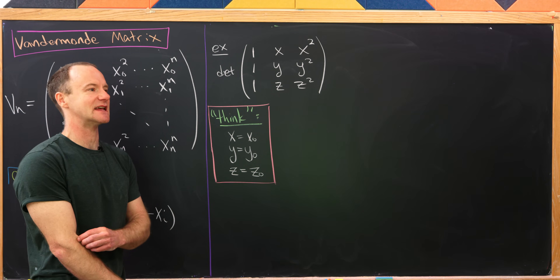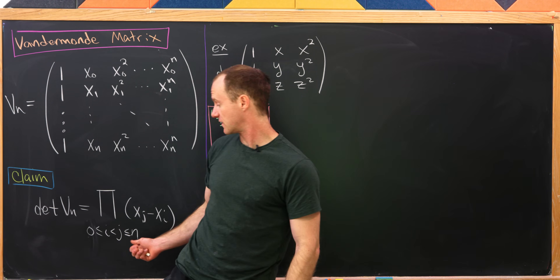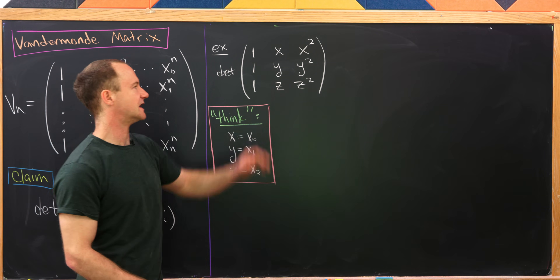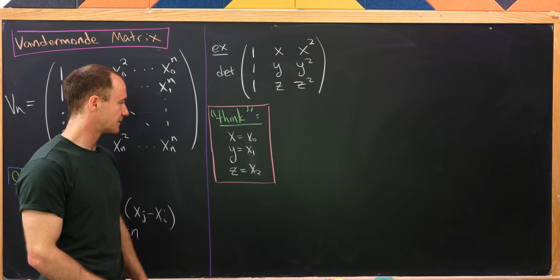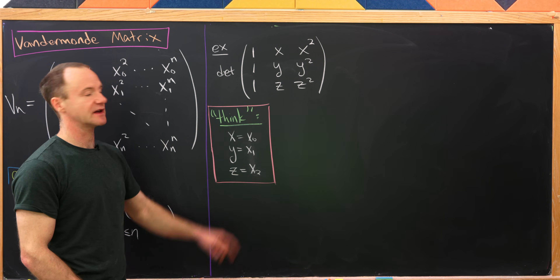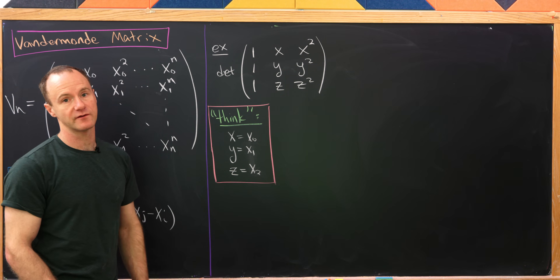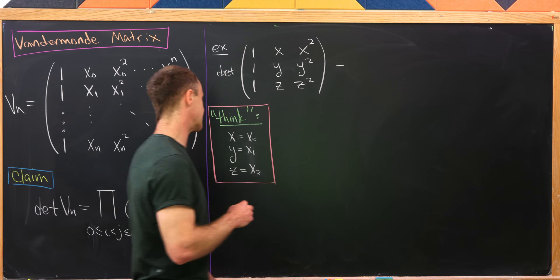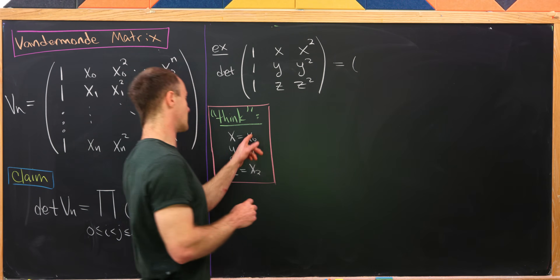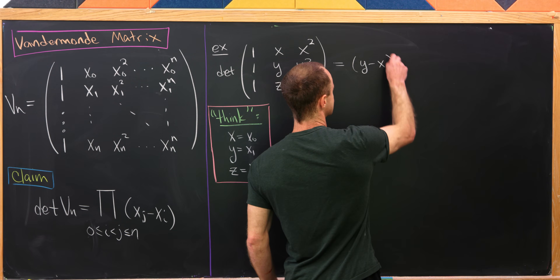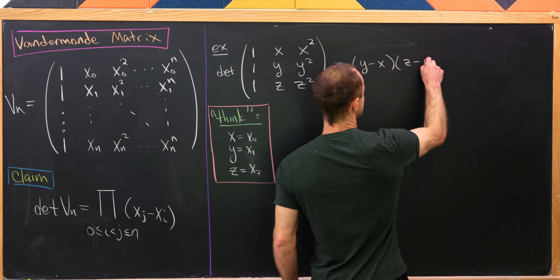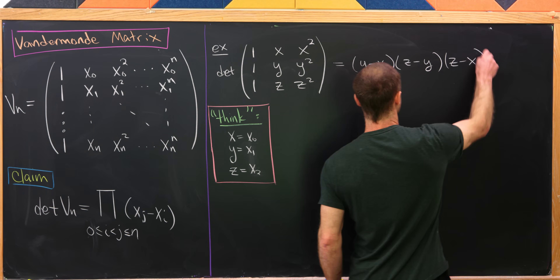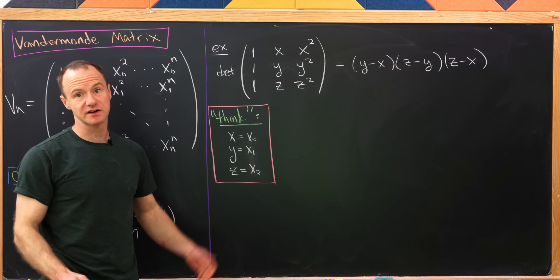Let's look at a little example before jumping in to proving this claim. We'll look at the determinant of the matrix with entries 1, 1, 1 in the first row; x, y, z in the second; and x squared, y squared, z squared in the third. With x playing the role of x0, y as x1, and z as x2, we get: y minus x, times z minus y, times z minus x. And that's our determinant.